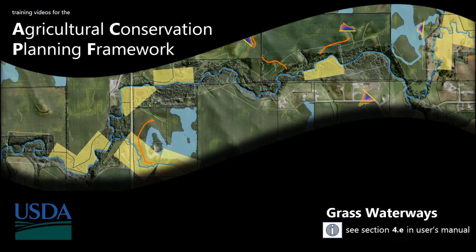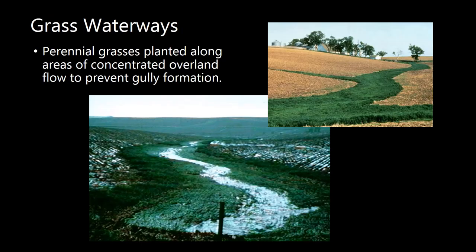In this video we're going to go over the grass waterway tool. Previously you should have already run the more terrain derivative tool, as those outputs will be needed to run the grass waterway tool. Grass waterways are strips of perennial grass planted along areas of concentrated flow, and they really help with preventing gully formation and capturing some sediment before reaching the stream or ditch further downstream.